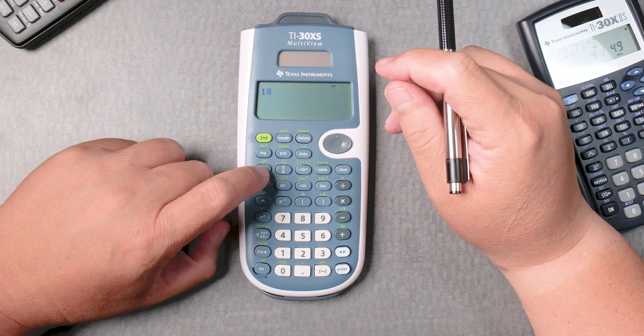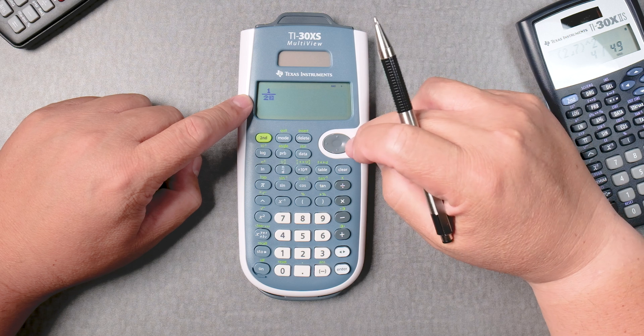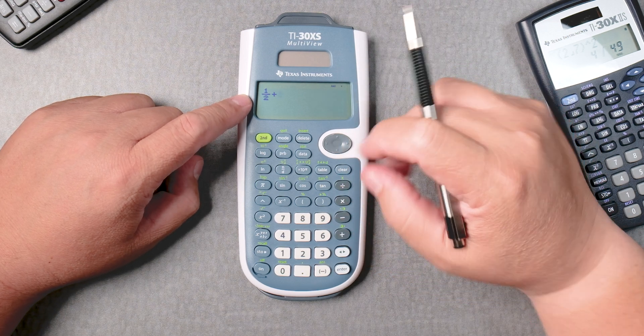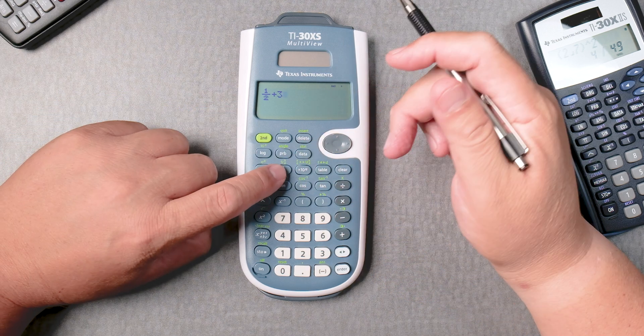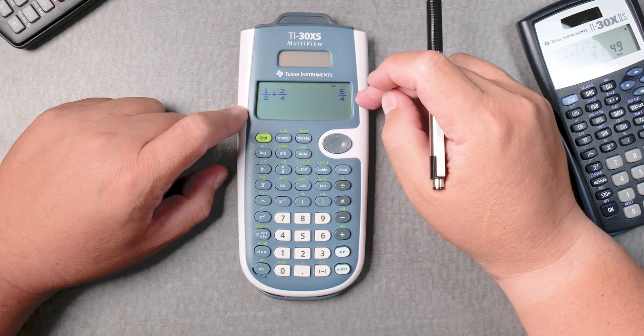Let's say 1abc2 for half. You can see it draws it. Use the d-pad, move it over, and then you add, let's say 3 over 4. 3, then the fraction button, 4. Enter. It gives you 5 over 4.